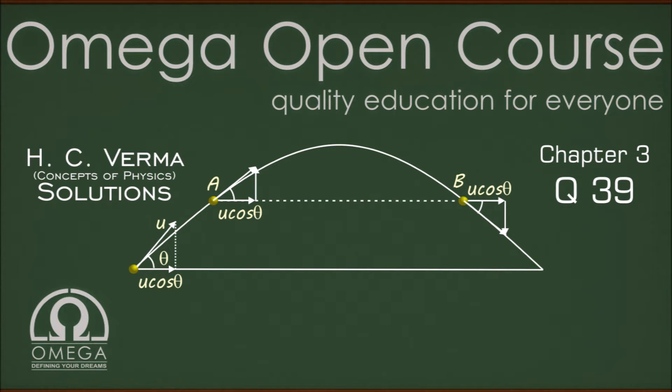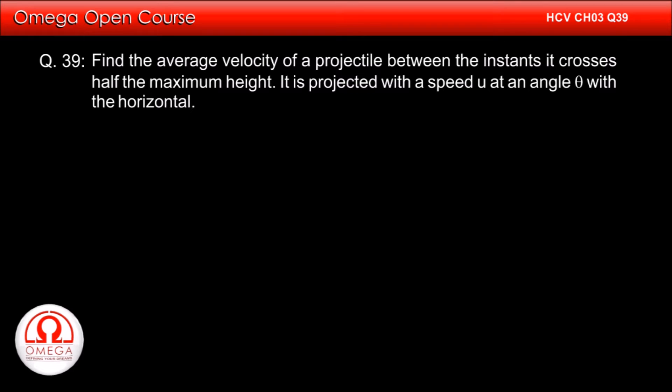H.C. Verma Chapter 3 Question No. 39: Find the average velocity of a projectile between the instants it crosses half the maximum height. It is projected with a speed u at an angle theta with the horizontal.